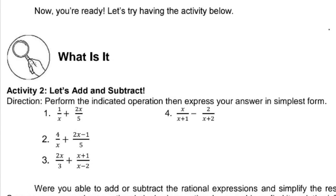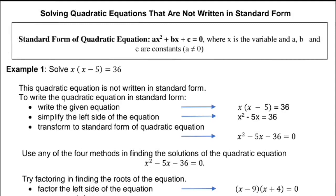Then what is it? You're going to have Activity 2: Let's Add and Subtract. Perform the indicated operation and express your answer in simplest form — same as the given example. You're going to find the LCD first, then divide the LCD by the denominator and multiply it to the numerator. Then let's start solving quadratic equations that are not written in standard form. The standard form of a quadratic equation is ax squared plus bx plus c equals 0, where x is the variable, a, b, and c are constants, and a is not equal to 0.